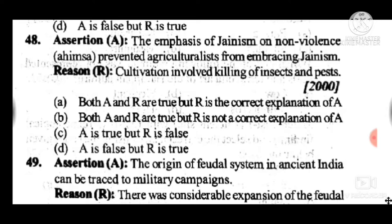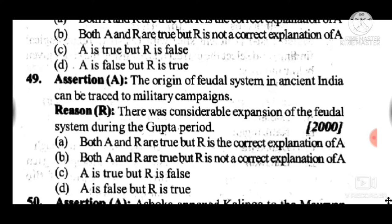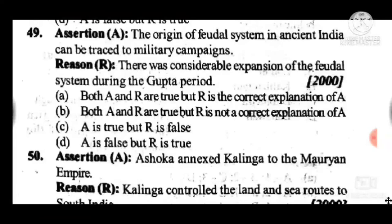Question 49: The origin of the feudal system in ancient India can be traced to military campaigns. The reason is that there was considerable expansion of the feudal system during the Gupta period. Answer is B. Question 50: Ashoka annexed Kalinga to the Mauryan Empire; Kalinga controlled the land and sea routes to south India. Answer is A — both A and R are true.